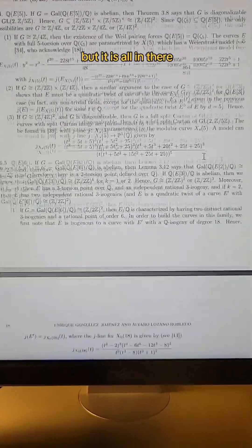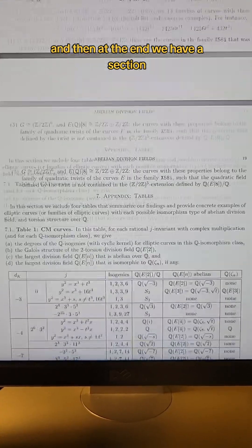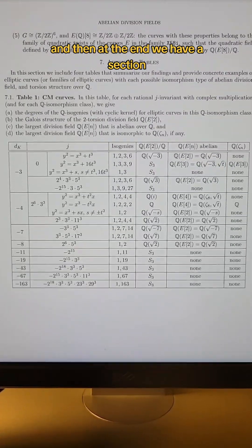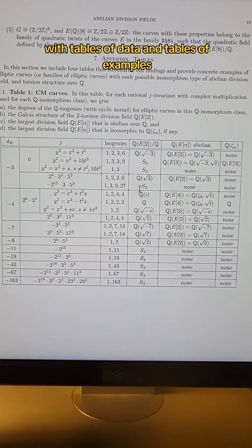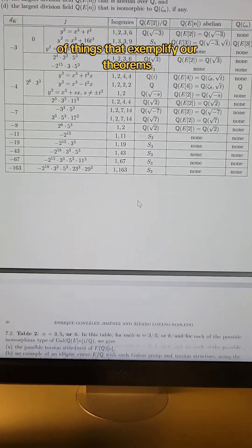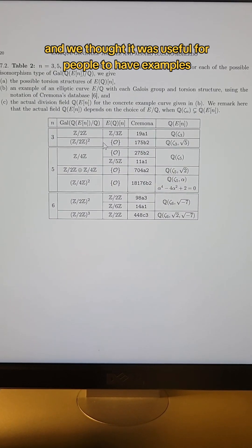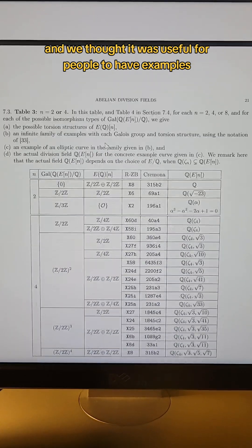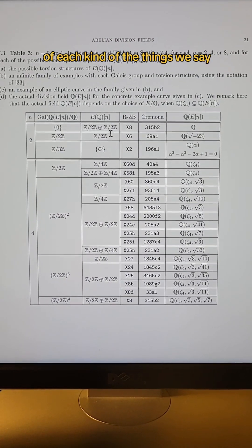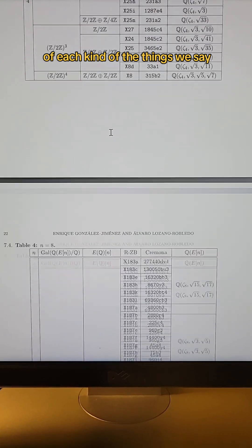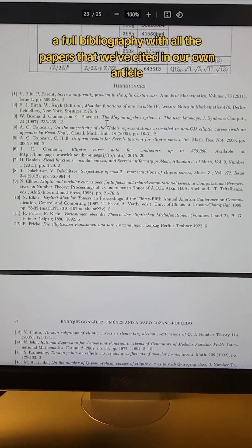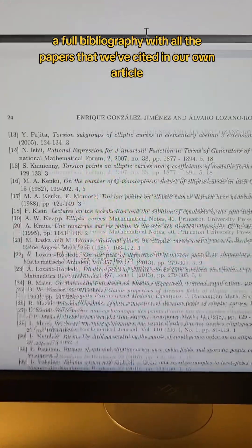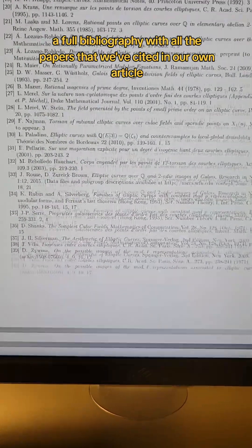And then at the end, we have a section, section seven, some appendix with tables of data and tables of examples of things that exemplify our theorems. And we thought it was useful for people to have examples of each kind of the things we say there exist. And finally, of course, a full bibliography with all the papers that we've cited in our own article.